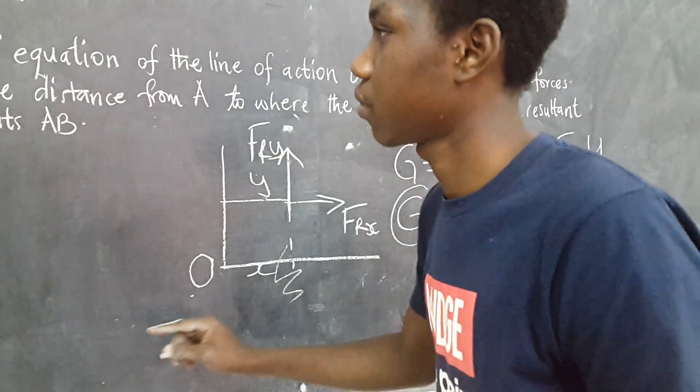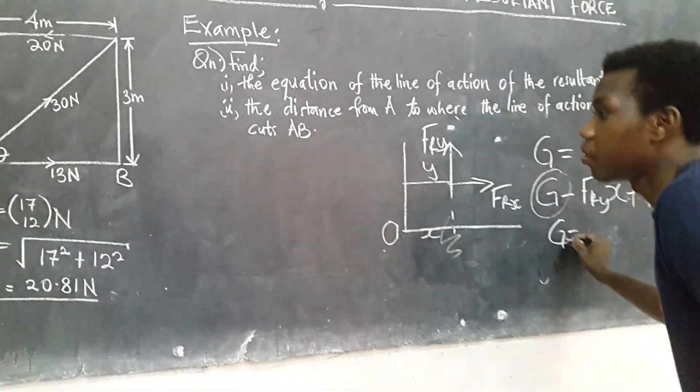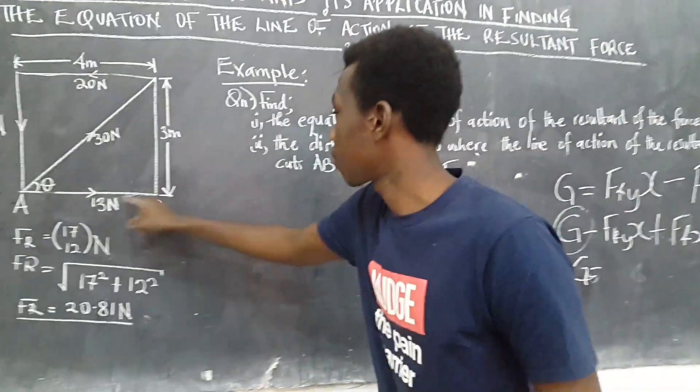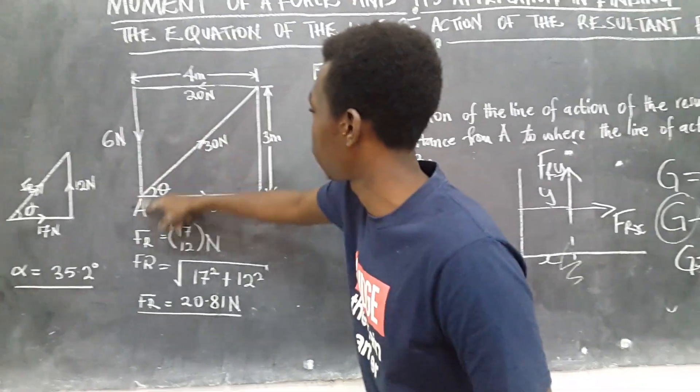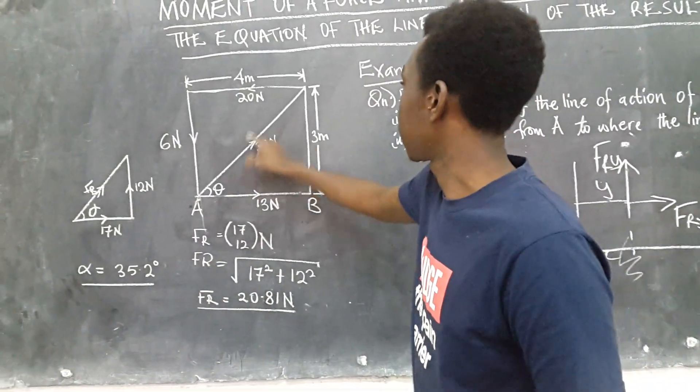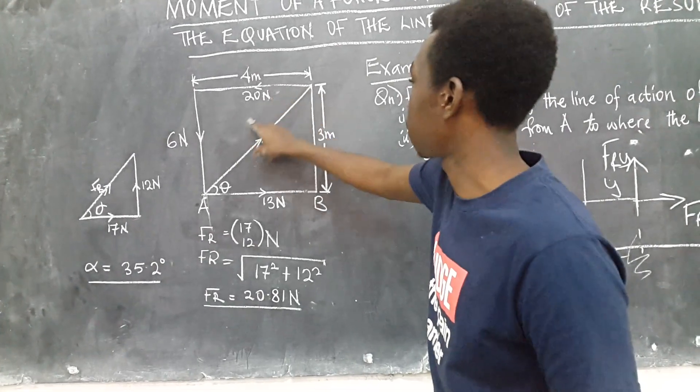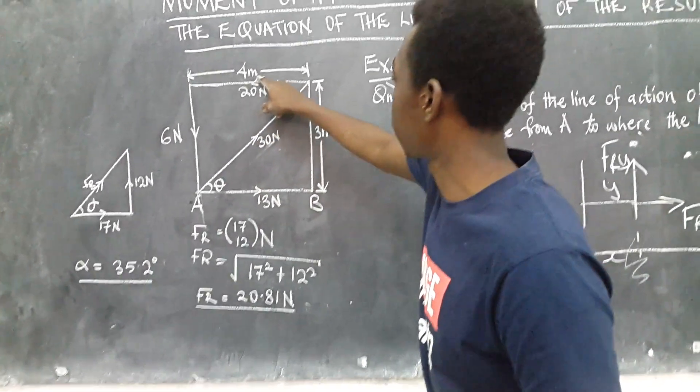So in order to find the equation of the line of action of this force we need to find G which is the sum of the moments of these forces about A. So we shall have for the 13 newton force, G will be equal to, for the 13 newton force it is passing through the point,